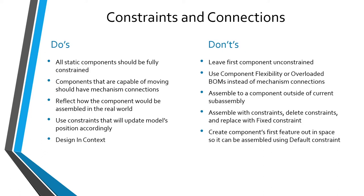Fourth do: make sure you use constraints that will update the component's position accordingly. For example, if that jet plane needs to get two feet longer or shorter, you want to make those changes and have everything move appropriately in the rest of the assembly. One technique people sometimes use is to assemble a component with constraints, then delete all constraints and add a fixed constraint once it's in the right position. That way there's no chance of a regeneration failure — but the problem is it defeats design intent and does not make your model parametric.